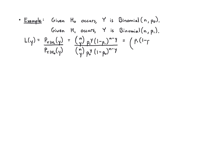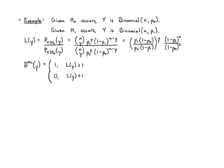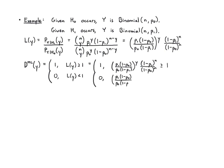Simplifying: the N-choose-Y terms cancel out, and we get the ratio of these parameters raised to the Y times (1 minus P1) to the N over (1 minus P0) to the N. For the ML rule, I just take this expression and compare it to 1. So I plug in the parameters and Y, then I check if it's greater than or less than one, and make my decision.